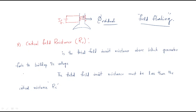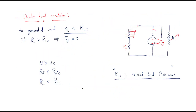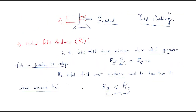The next point is the critical field resistance, which we already discussed. It is the total field circuit resistance above which the generator fails to build up voltage. The total field circuit resistance must be less than the critical field resistance. These are the important points covering load conditions and critical load resistance.